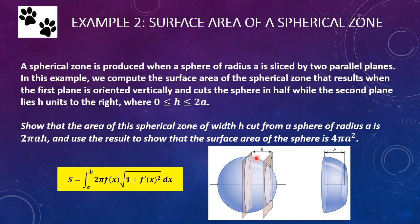You can see in the diagram that the first vertical cut is directly through the half of the sphere, so we have two hemispheres, one on each side, and then the second vertical cut to the right is h units apart. You can see the shape that is generated by that to the right. The goal is to show that the area of this spherical zone of width h cut from a sphere of radius a is 2 pi a h. This is a little more complicated than simply plugging in, so you may want to sit and watch and make sure you follow along.